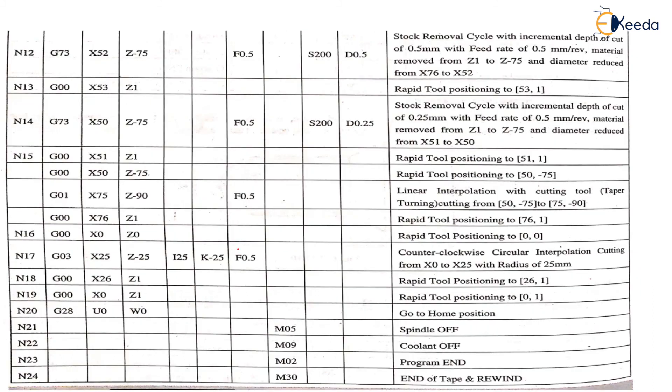And G03 — now we are actually moving this particular curvature part. This curvature part is moving in G03 as it is going counterclockwise direction. So X25, Z minus 25, I25, K minus 25. I and K are the center of that particular arc. So center of arc is at I25, K minus 25 — I will be along the X radius direction and K will be along the Z direction.